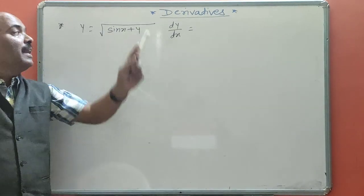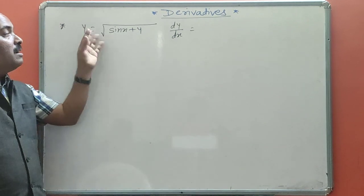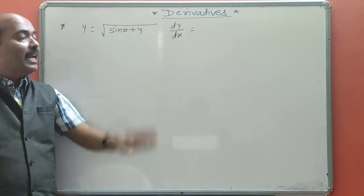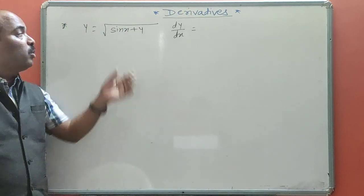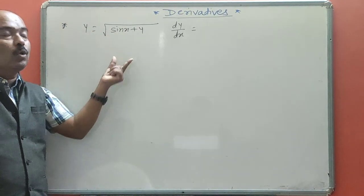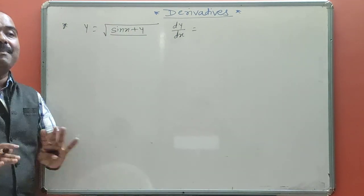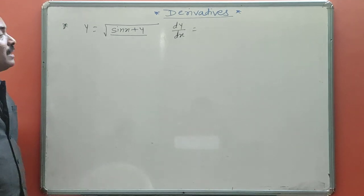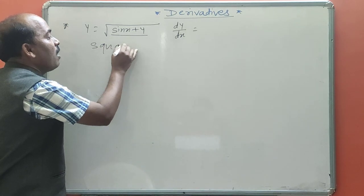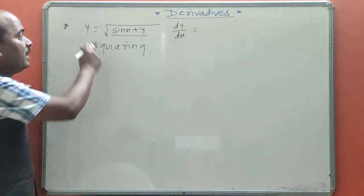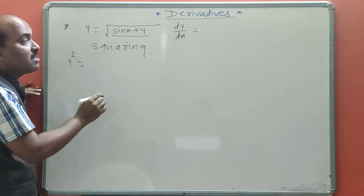Second example: y = √(sin x + y). Find dy/dx. One method is to compare this to y = √x and use derivative of √x = 1/(2√x), treating the inside as x. A simpler method: to remove the root, square both sides. Squaring: y² = sin x + y, since square and square root cancel.